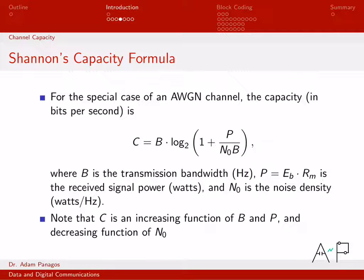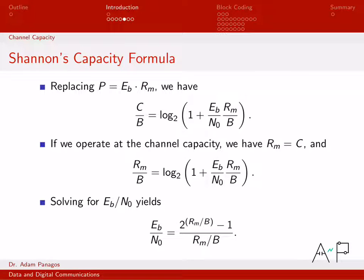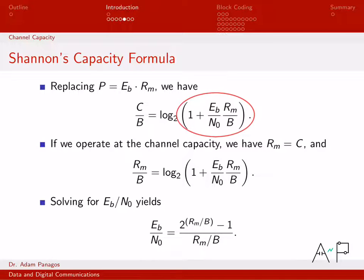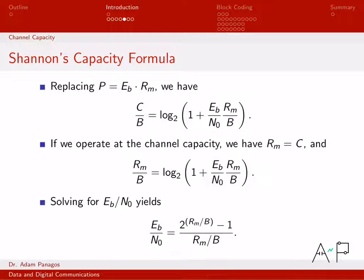Let's look at this equation in a bit more detail. We'll replace the power P by parameterizing it as energy per bit Eb times data rate Rm. All I did was replace P with Eb·Rm and split things up differently, factoring it as a product of two fractions. I also moved B to the other side, dividing both sides of the equation by B.